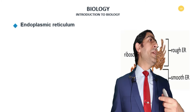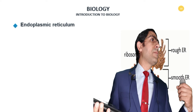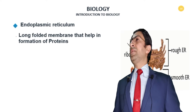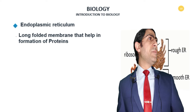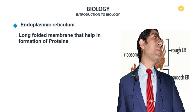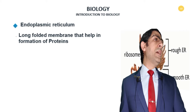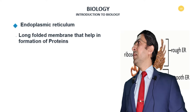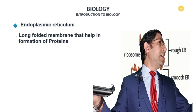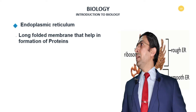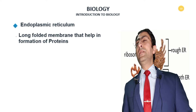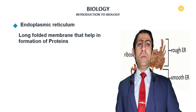The cytoskeleton — 'cyto' means cell, 'skeleton' means structure — is a network found inside the cytoplasm made of microtubules and filaments. It provides support and shape to the cell, anchors the organelles inside the cell, helps in the positioning and transport of organelles, provides strength, assists in cell division, and helps in movement.